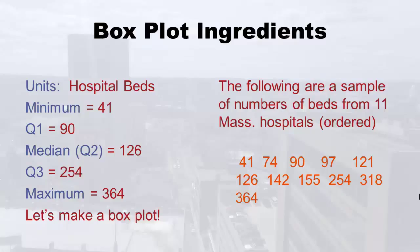The smallest hospital had only 41 beds. Q1 was 90. The median — Q2 — was 126. Q3 is 254. And the maximum was 364. Now let's make a box plot.